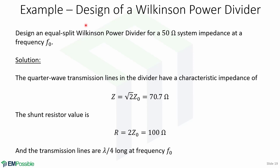Let's look at a quick example of a Wilkinson power divider. Design an equal split Wilkinson power divider for a 50 ohm system impedance at frequency F0. The solution is very simple. Since we already derived the equal split Wilkinson power divider, the quarter-wave transmission lines will have a characteristic impedance of square root of 2 times Z0, which equals approximately 70.7 ohms. The shunt resistor value is 2Z0, equal to 100 ohms, and the transmission lines are quarter-wavelength long at frequency F0.